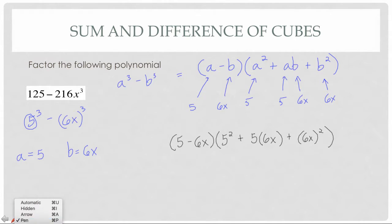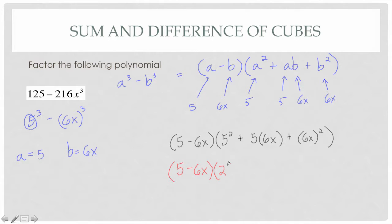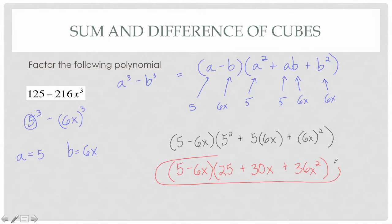Now let's simplify. 5 − 6x stays the same — not really anything to simplify there. 5² turns into 25. 5 times 6x equals 30x. And (6x)² equals 36x². There are no like terms to combine, so this is my final answer. We took one polynomial and factored it into two polynomials, recognizing the special case of the difference of two cubes.